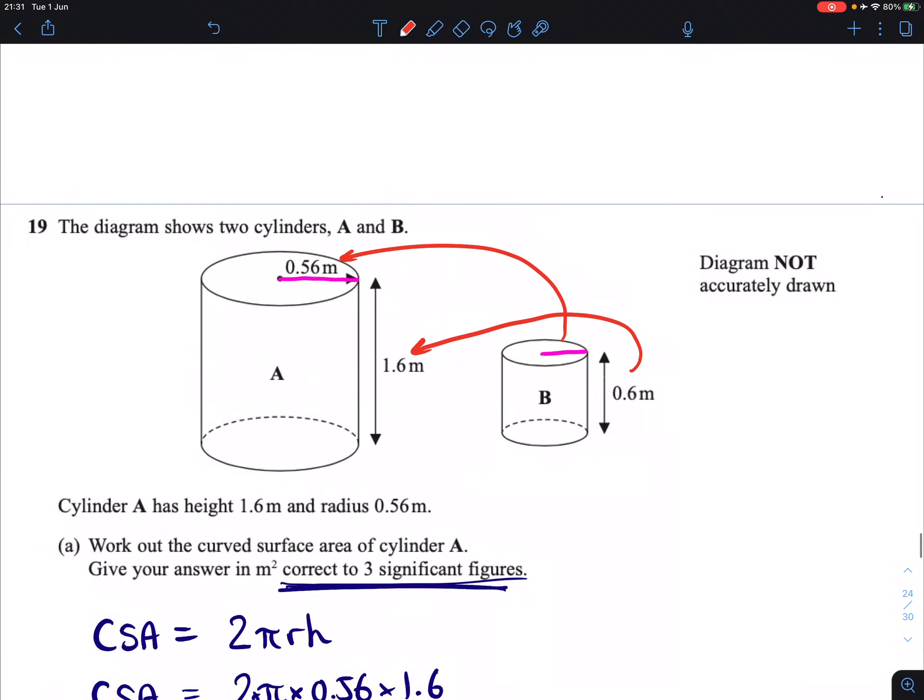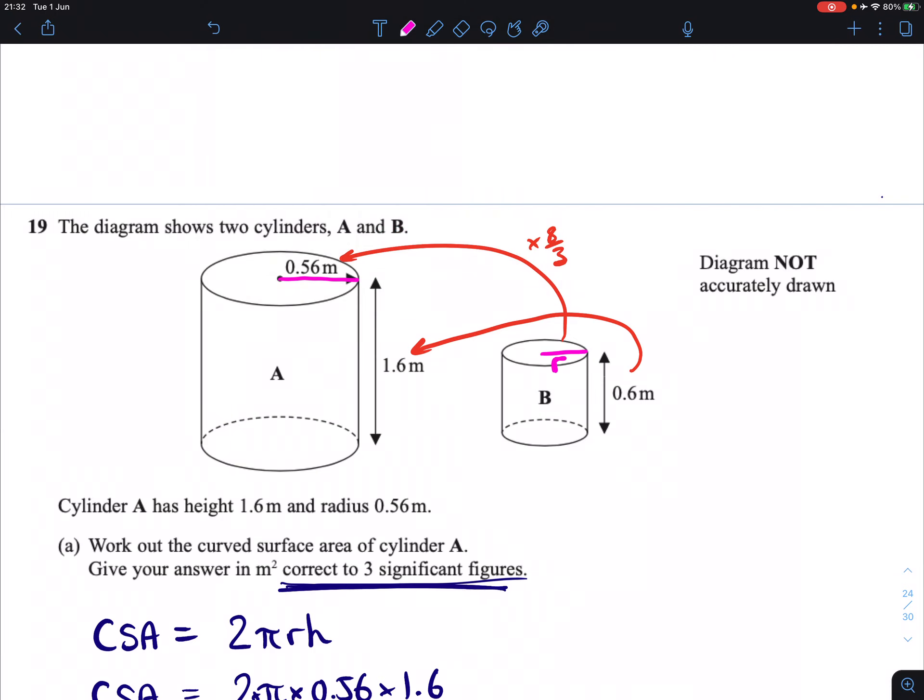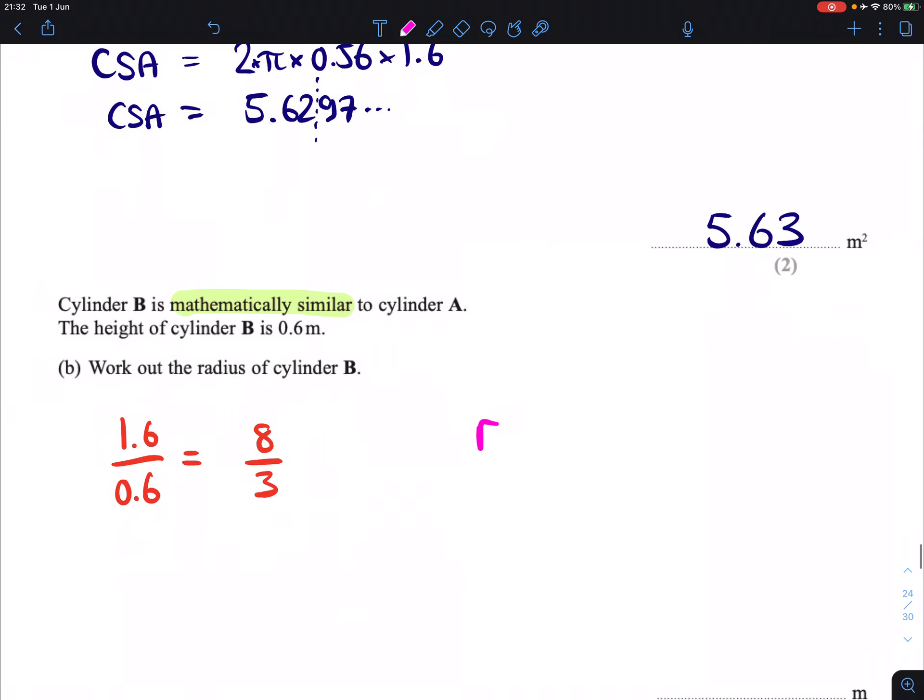Work out the radius of cylinder B now. 0.56 is going to be the radius of the small one times this 8 over 3. So, if I label our small radius here, I'll call it R. R times 8 thirds equals 0.56. So, that's what I'm going to write down. R times 8 over 3 is going to equal 0.56, and that's just an equation that I can solve now.